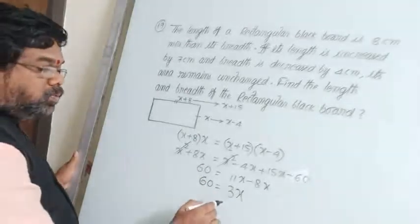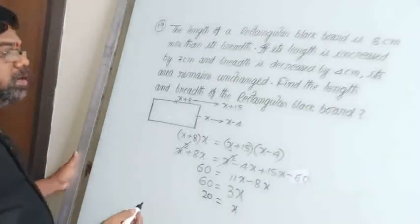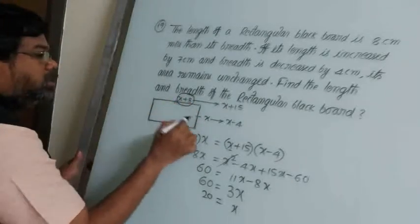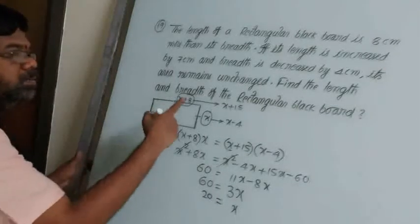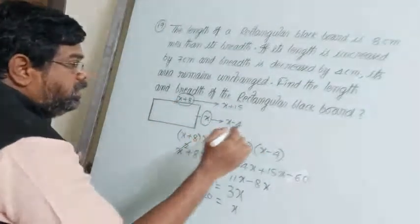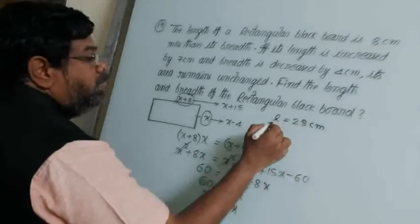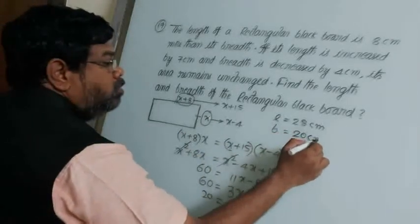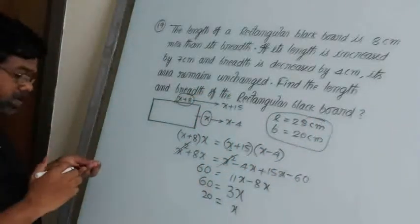So x = 20. The breadth is x = 20 cm and the length is x + 8 = 28 cm. The length and breadth of the rectangular blackboard are 28 cm and 20 cm respectively.